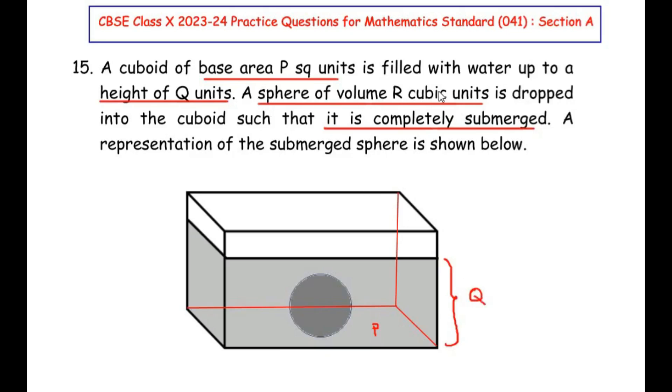A sphere of volume R cubic units is dropped in the water and it is completely submerged. So volume of the sphere is given as R cubic units. So let me write over here. Now here we have to find out if we submerged the sphere inside the water, by how much amount is the level of water increasing.